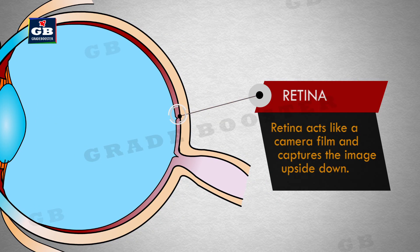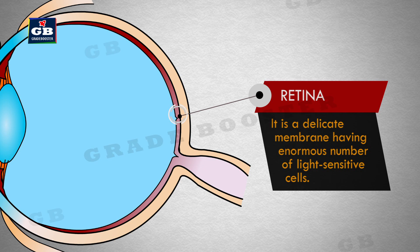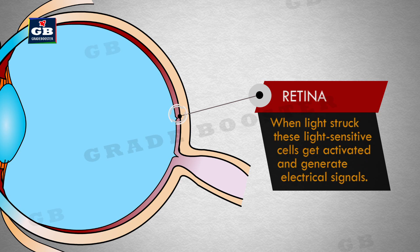This is the retina. The retina acts like a camera film and captures images upside down. It is a delicate membrane having an enormous number of light-sensitive cells. When light strikes these light-sensitive cells, they get activated and generate electrical signals.